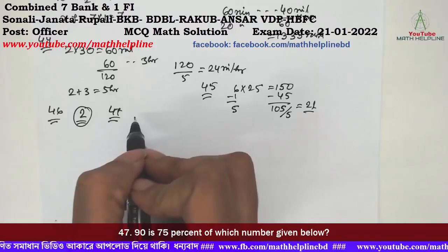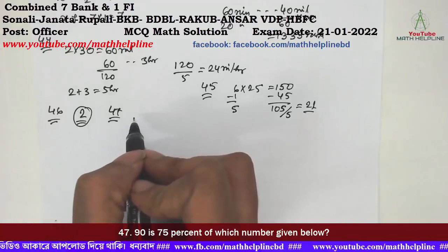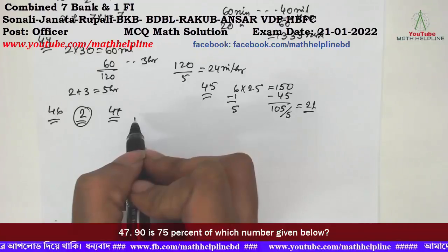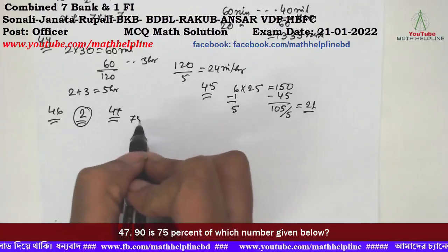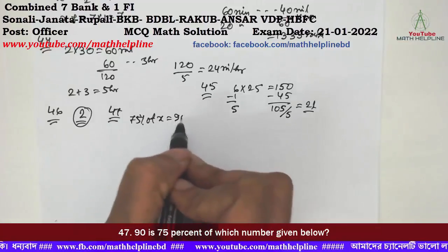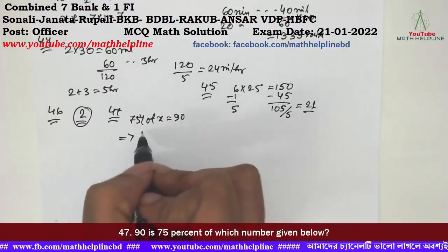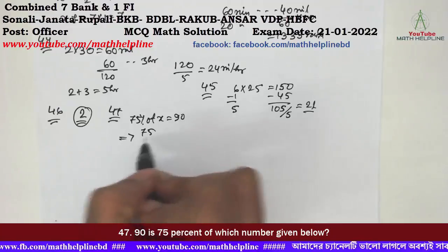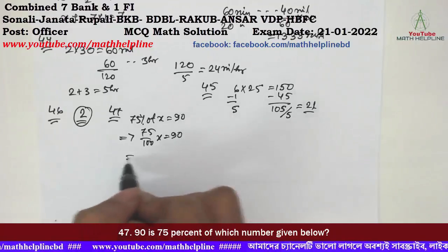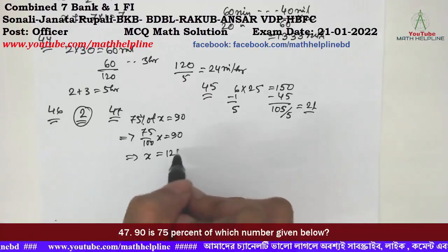Number 47: 75% of which number equals 90? So 75% of x equals 90. Therefore x equals 90 times 100 divided by 75, which gives x equals 120.